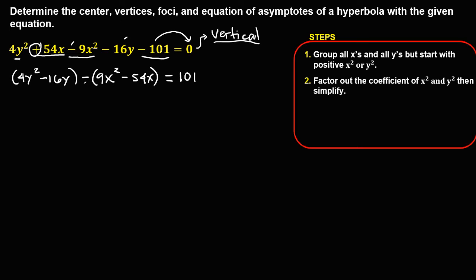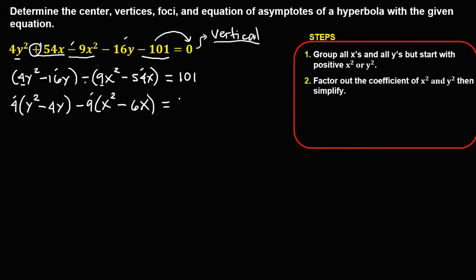We need to factor out the coefficient of x squared and y squared. To factor out the equation of y, put 4 outside. So this becomes y squared minus 16 divided by 4, that's 4y. Then for x, factor out 9, so put 9 outside. This becomes x squared minus 54 divided by 9, that's 6x, then equals 101.